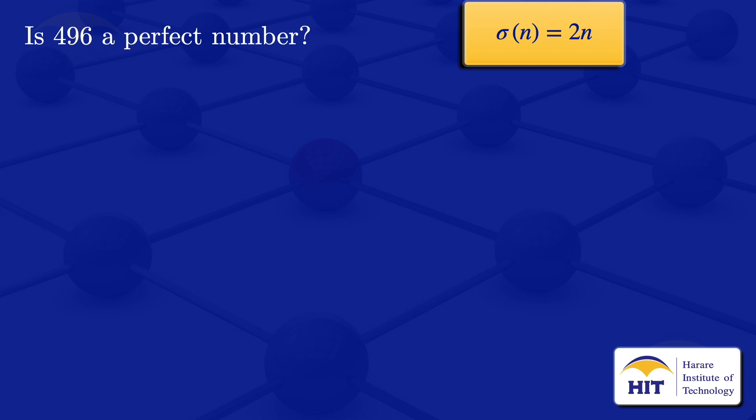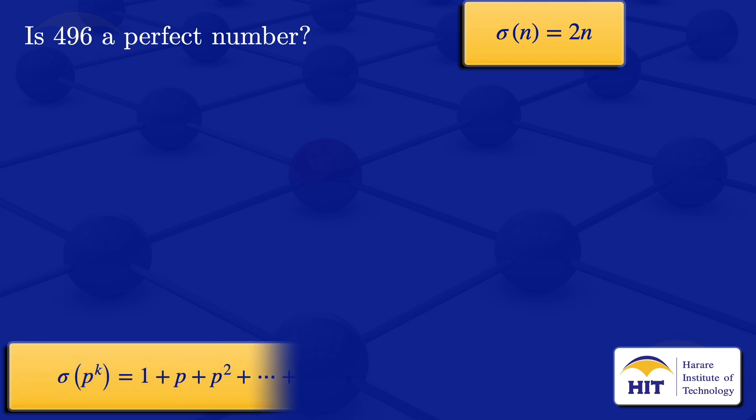To find the sum of divisors of n, we use the formula which says that sigma of p to the power k equals 1 plus p plus p squared, up to p to the power k, where p is a prime number and k is an integer.